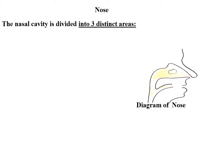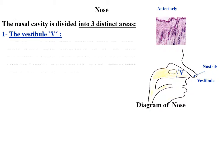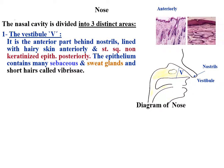The nasal cavity is divided into three distinct areas. The vestibule is the anterior part behind the nostrils, lined with hairy skin anteriorly and stratified squamous non-keratinized epithelium posteriorly. The epithelium contains sebaceous and sweat glands and short hairs called vibrissae.